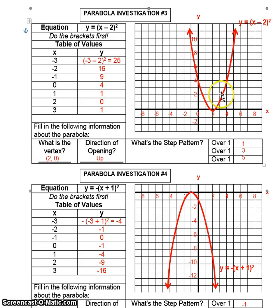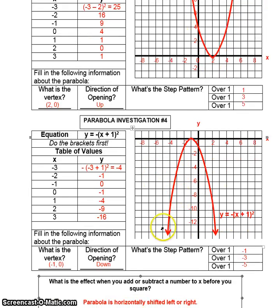This again doesn't change the shape. You're still opening up and your step pattern is still one, three, five. Obviously your vertex is going to change. And the only reason this guy is opening down is because of this negative in front. So in this case, your a value is a negative one.